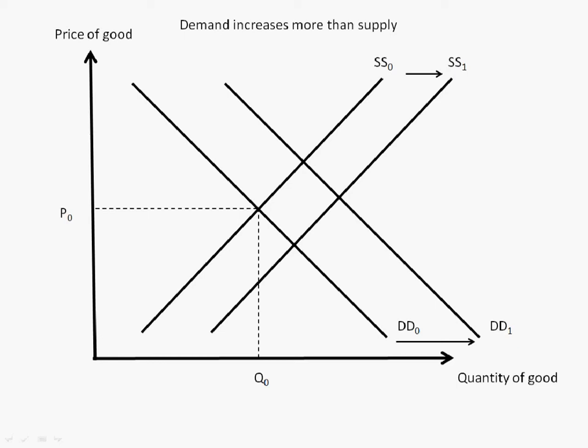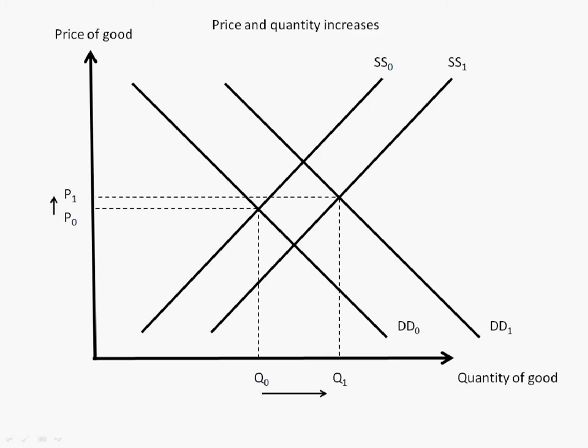When the demand curve shifts to a larger extent than the supply curve, both the equilibrium price and quantity of goods will increase from P0 to P1 and Q0 to Q1 respectively.